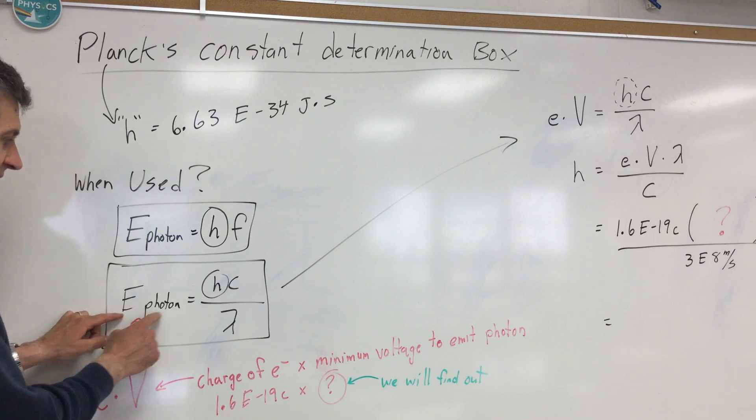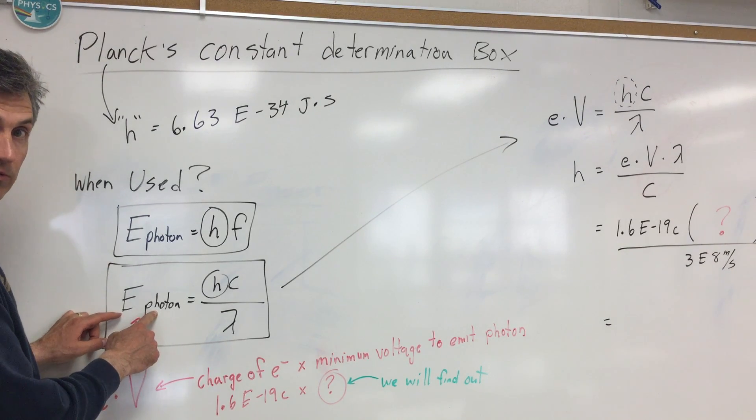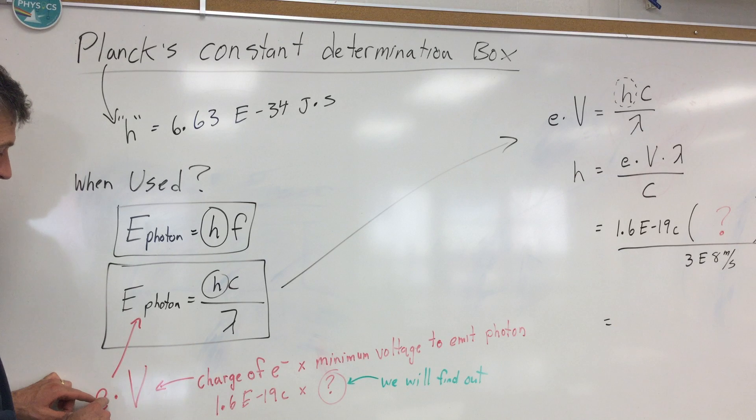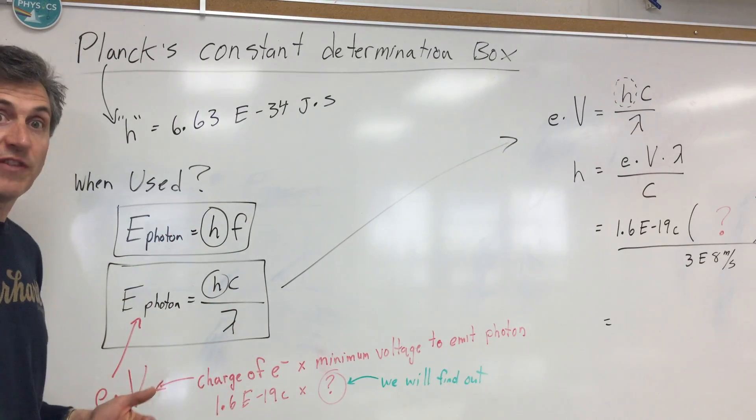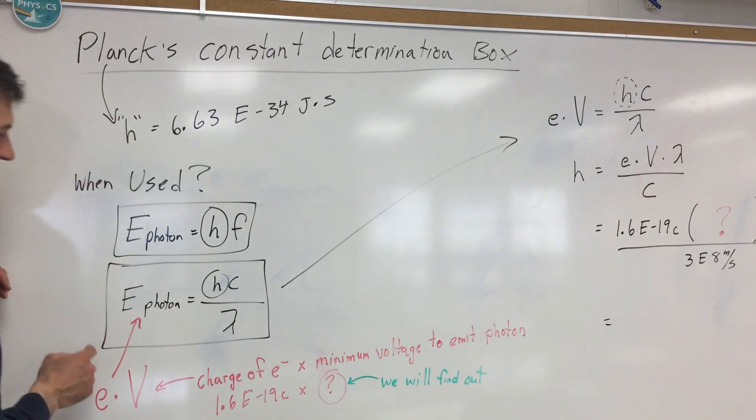But instead of using energy and joules like we normally do in physics class, we're going to do an EV. EV means the charge of an electron times the voltage. And in this case, it's the voltage in order for the light to just be emitted. So we just found that a second ago.